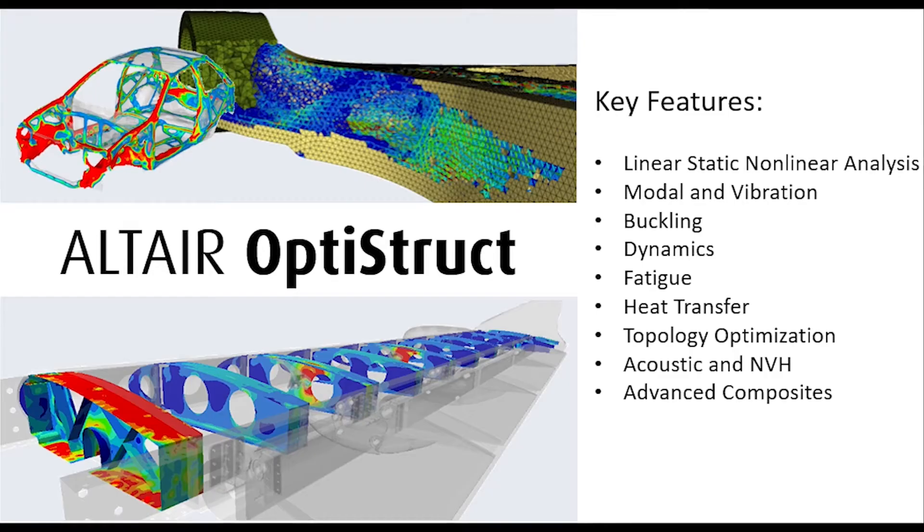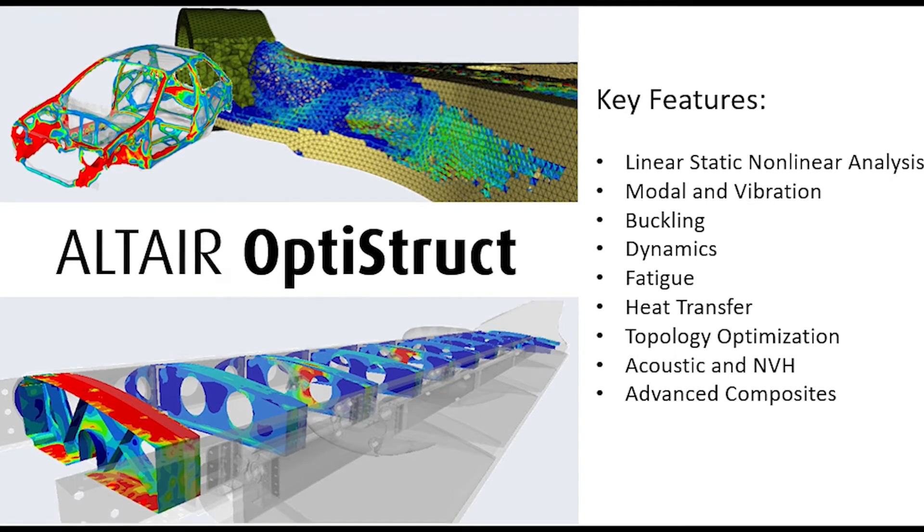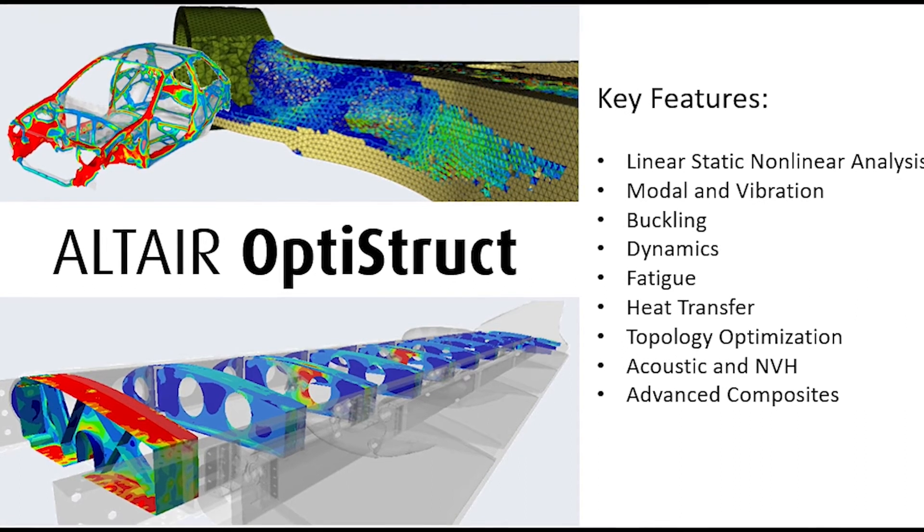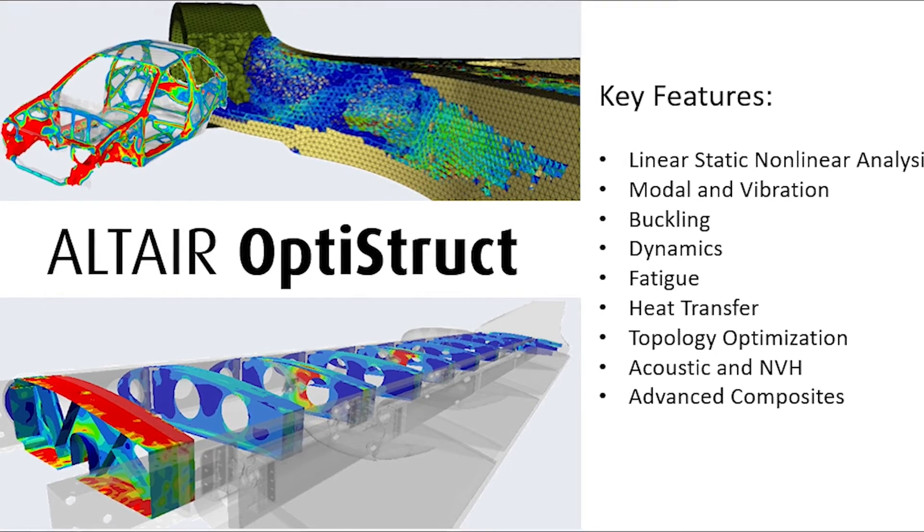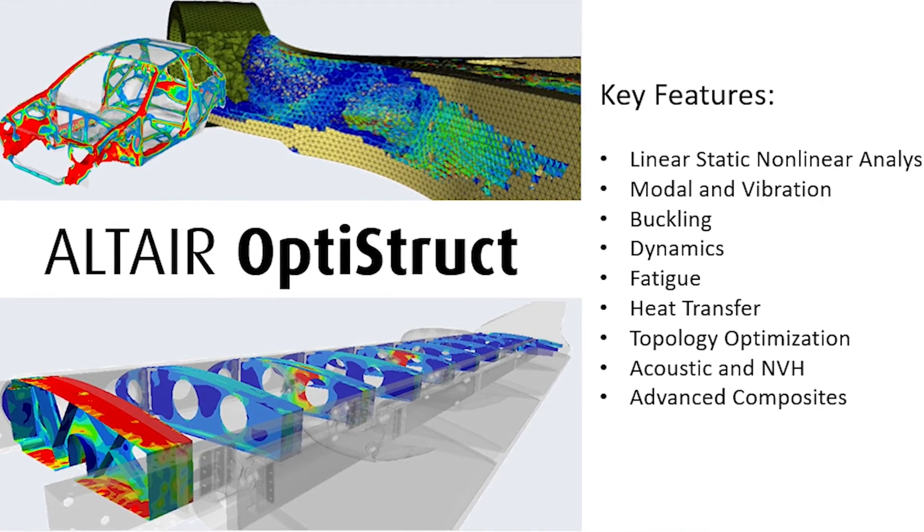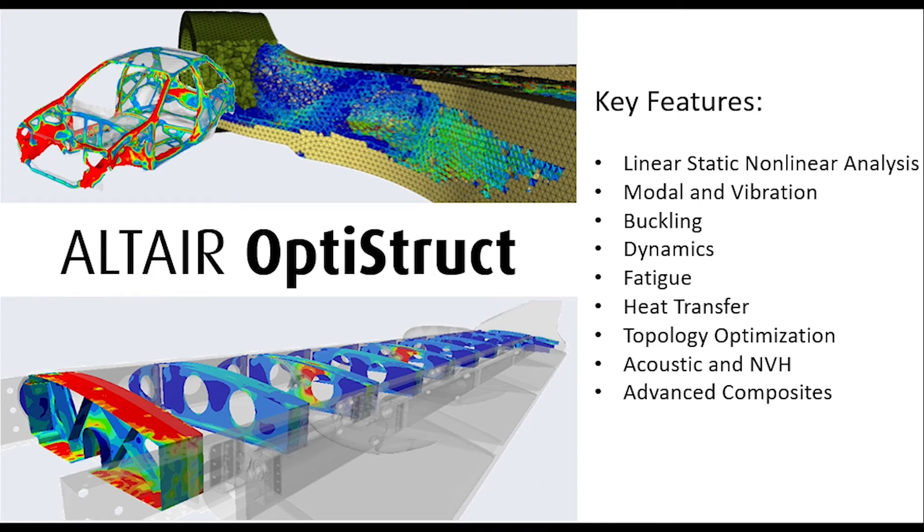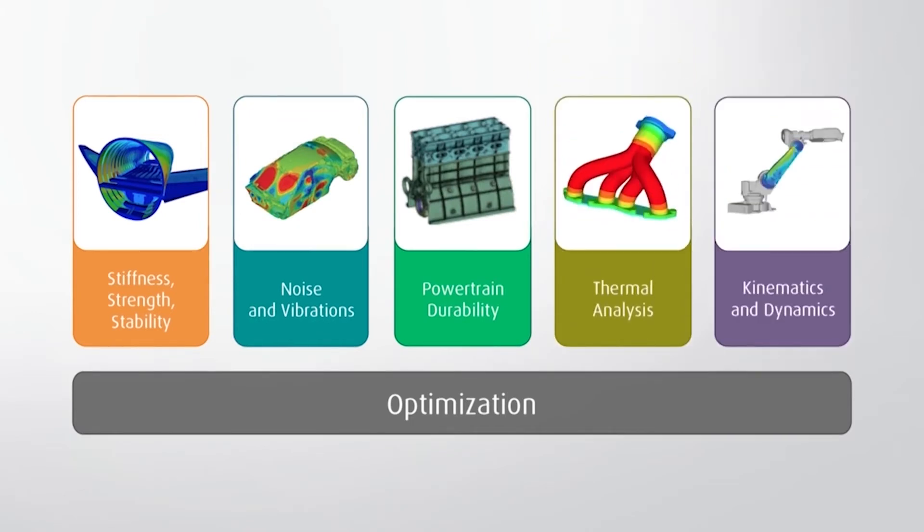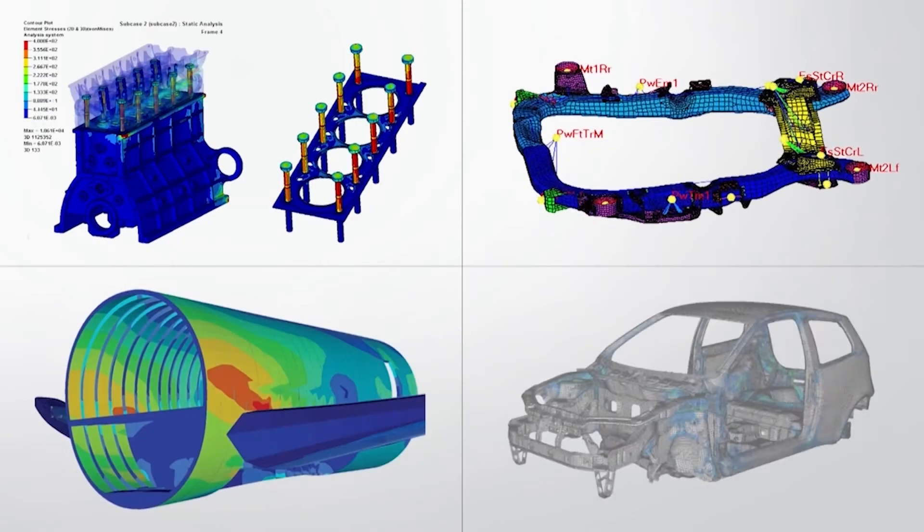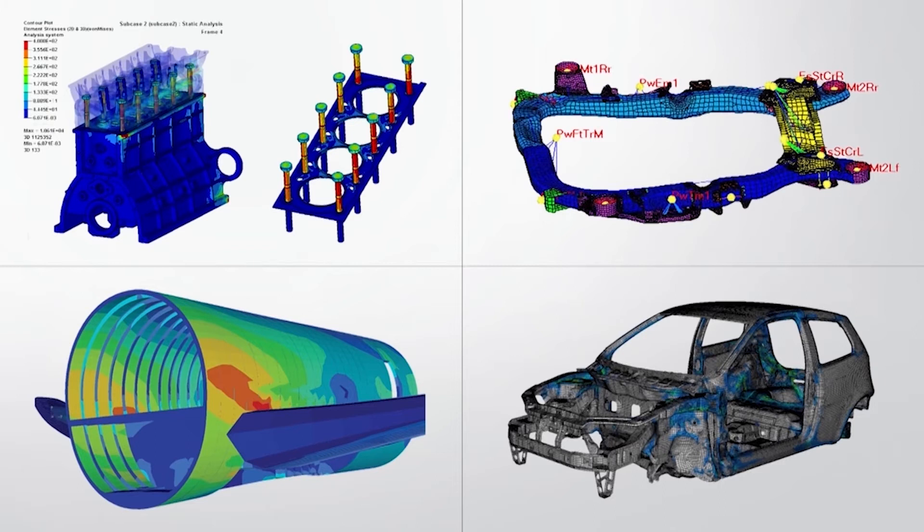Altair OptiStruct is an incredibly powerful solver for implicit and explicit testing as well as topology optimization solvers for linear and non-linear variations, acoustic, fatigue, heat transfer, and multi-physics analysis. It is scalable on CPU and GPUs. The optimization technology inside OptiStruct is extremely powerful and includes the ability to run optimization for many applications.